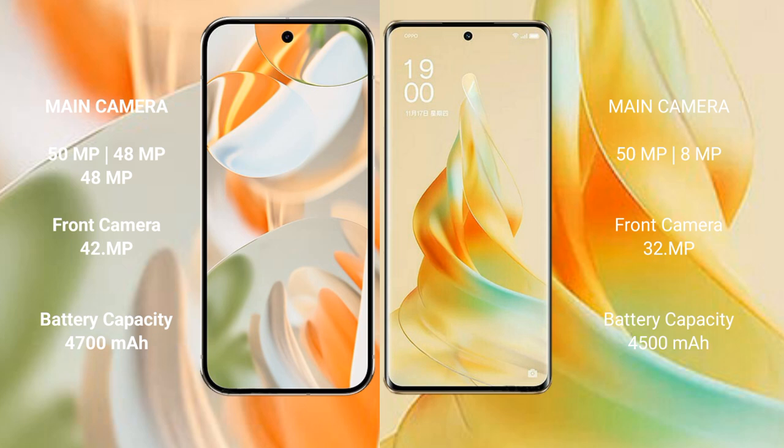Google Pixel 9 Pro has a 4600mAh battery with 27W fast charging support. Oppo Reno 9 Pro has a 4500mAh battery with 67W fast charging support.